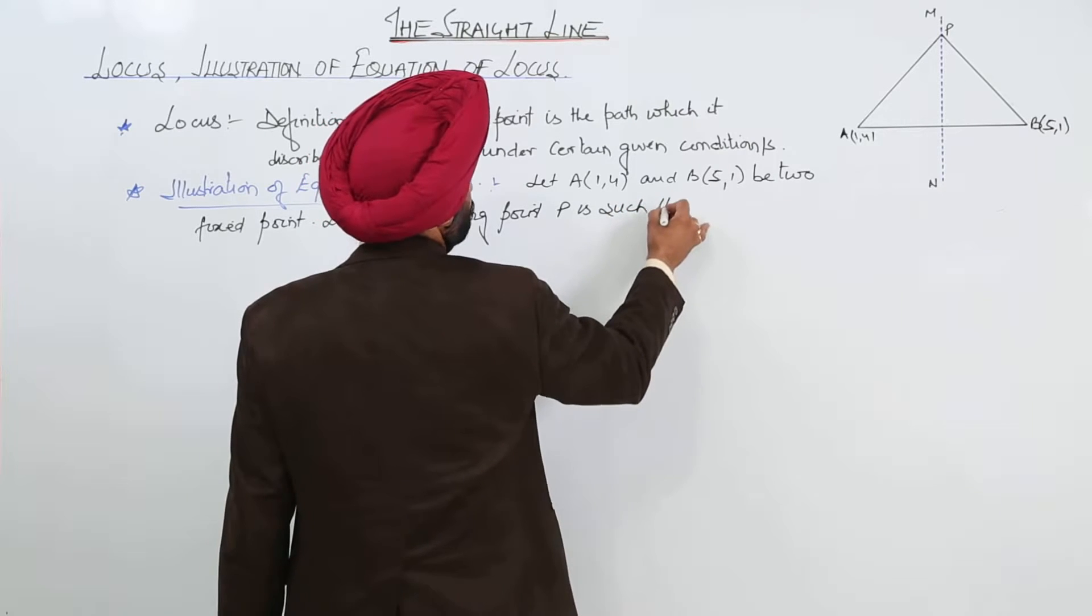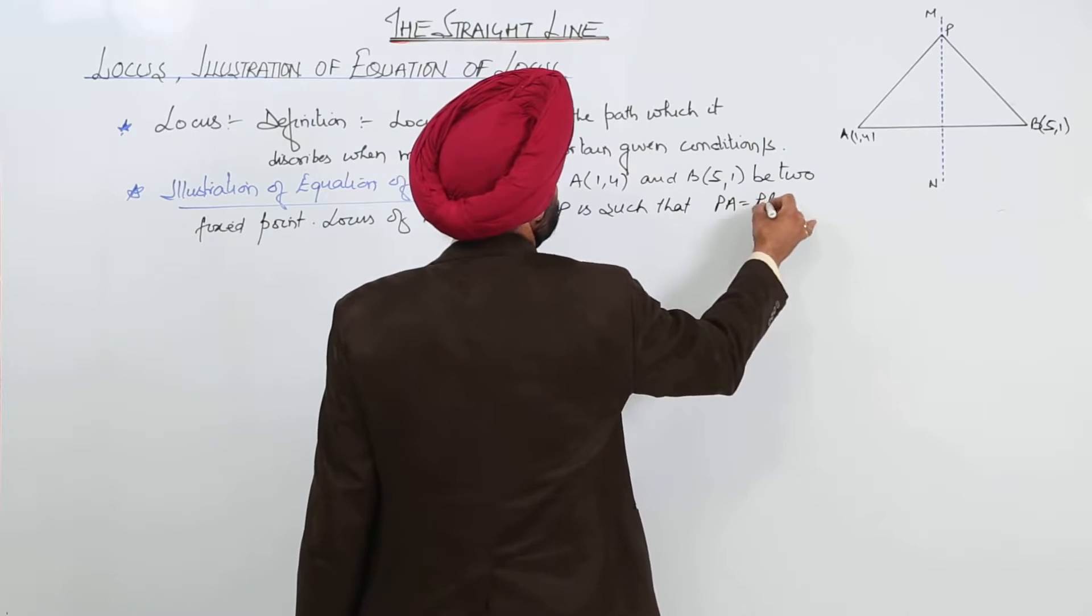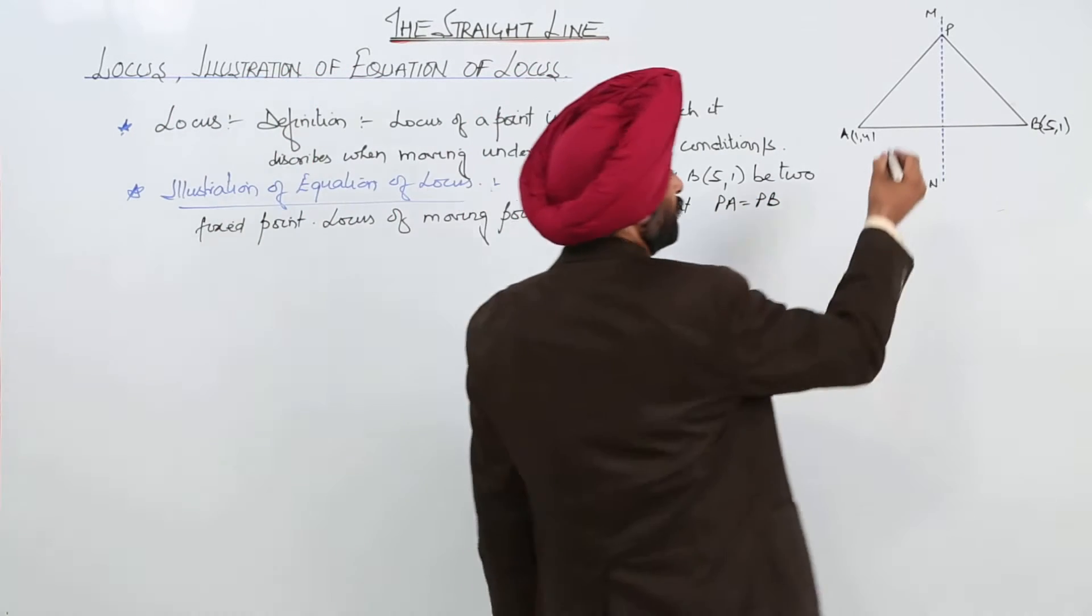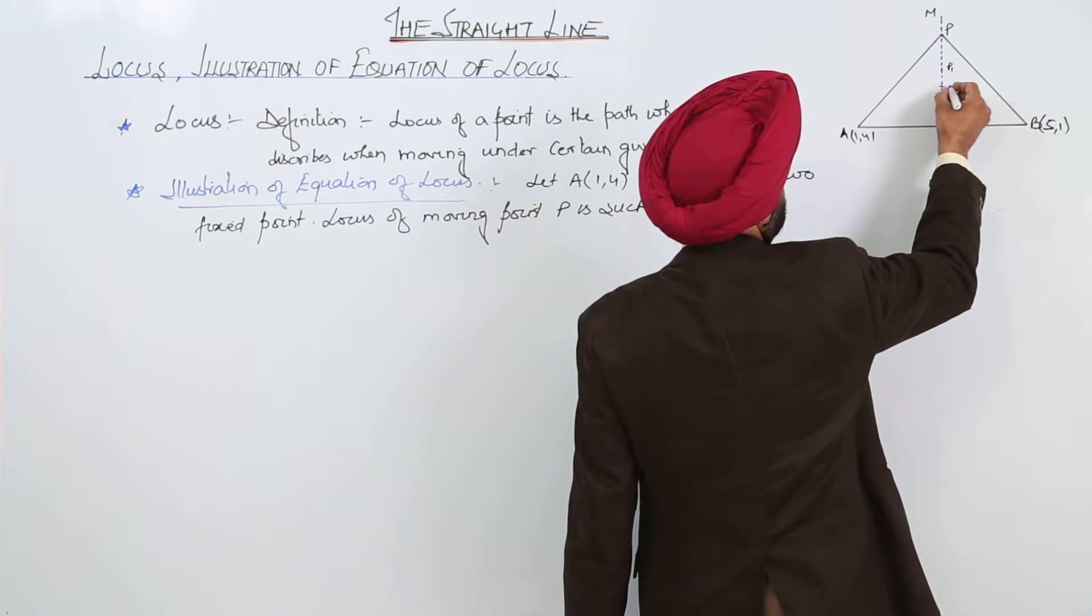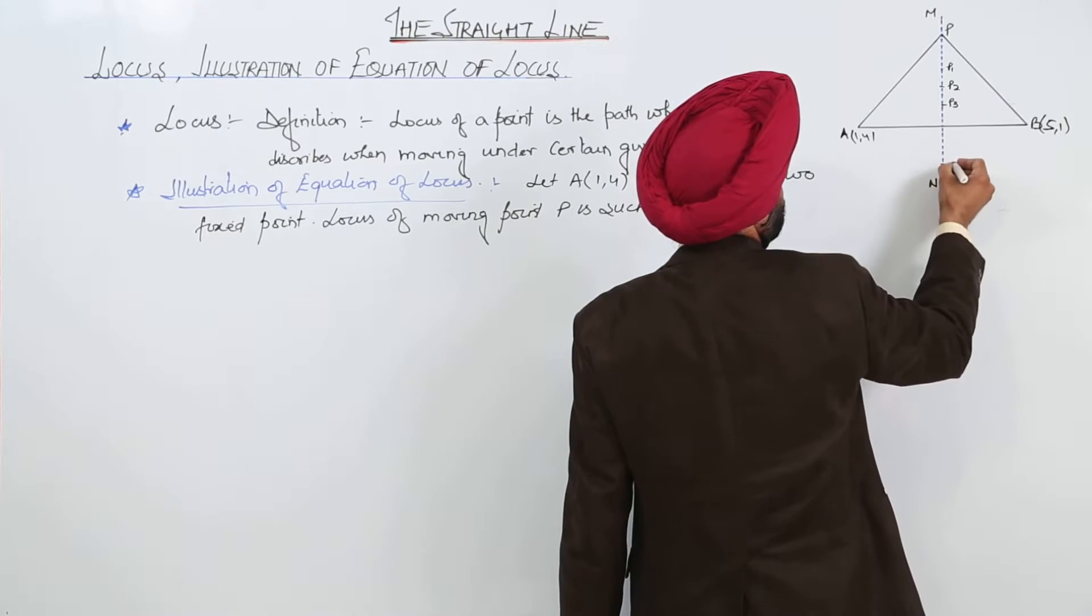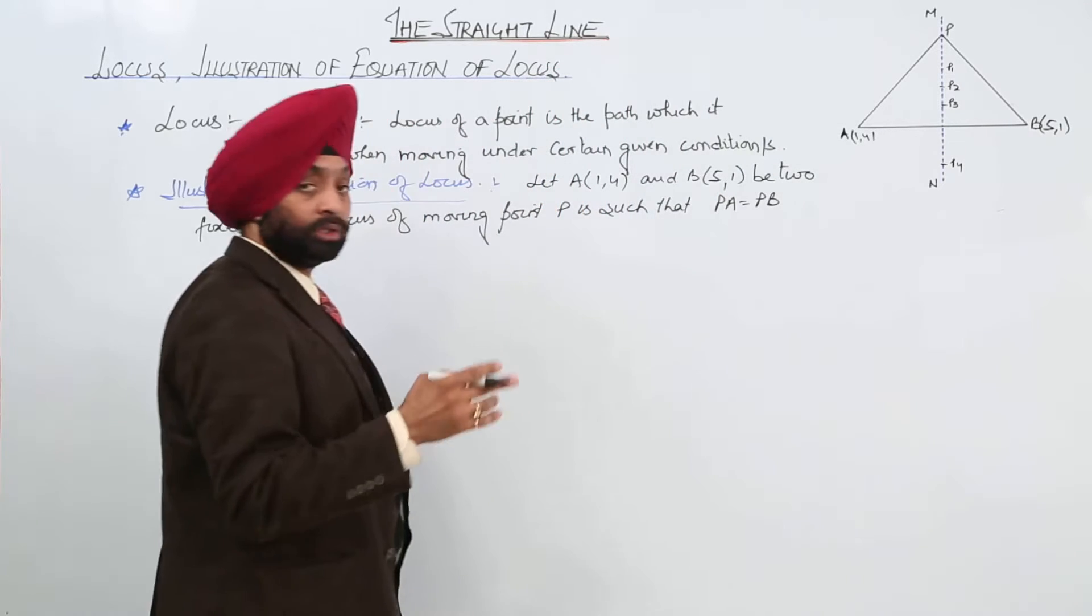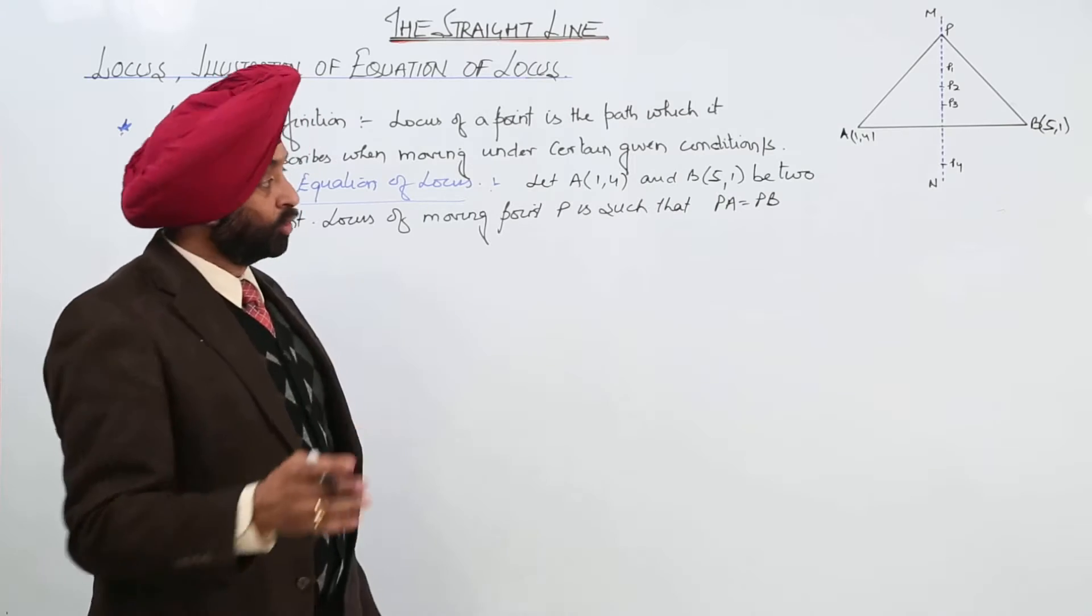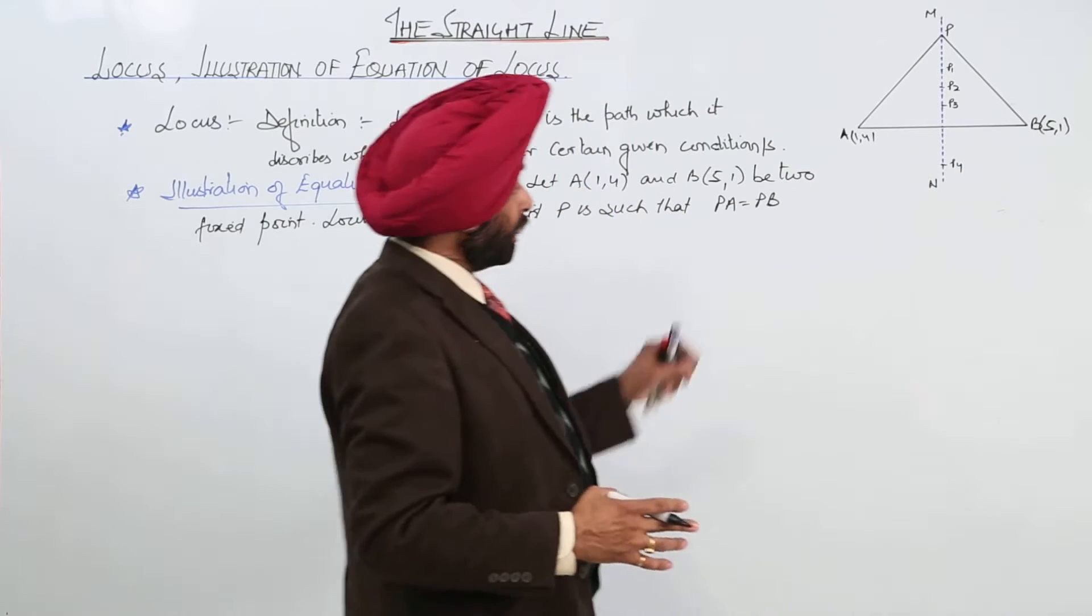Now, locus of moving point P is such that, what is the condition you have already studied? Such that PA is equal to PB. Now, suppose I am having here one of the points, I am having P1, let another point here P2, let another point here P3, let another point here P4. So, P1A is equal to P1B, P2A is equal to P2B. Like this, distance should be equal.